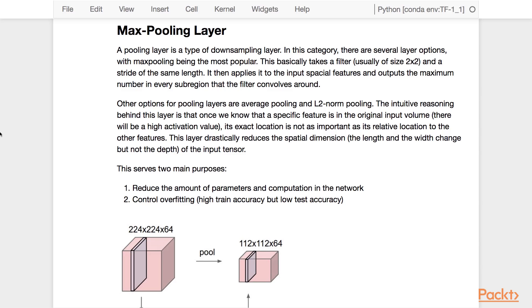The intuitive reasoning behind this layer is that once we know that a specific feature is in the original input volume, the exact location is not as important as its relative location to the other features. This layer drastically reduces the spatial dimension of the input tensor, and it serves two main purposes.